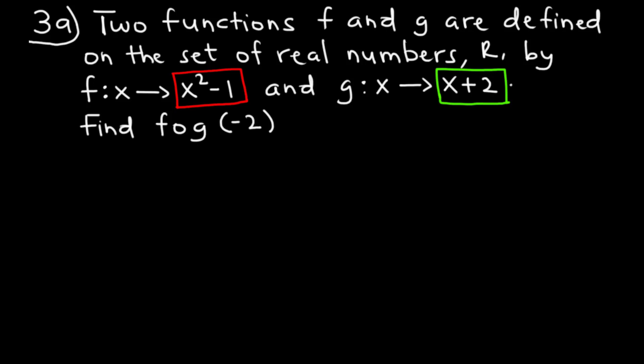we are going to solve question 3A of OAC 2020 elective mathematics paper 2, a problem on composite functions. The question reads: two functions f and g are defined on the set of real numbers R by f(x) = x² - 1 and g(x) = x + 2. Find f∘g(-2).